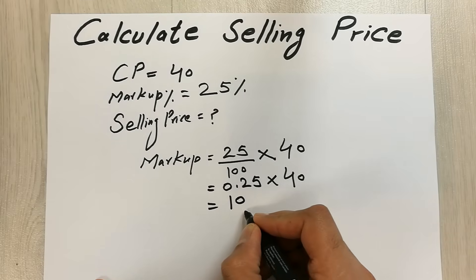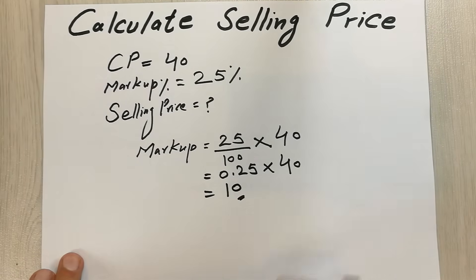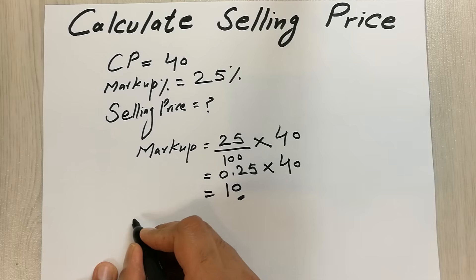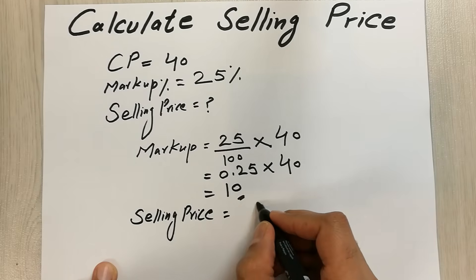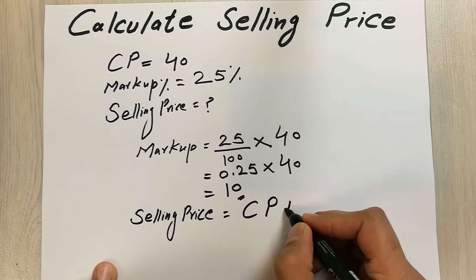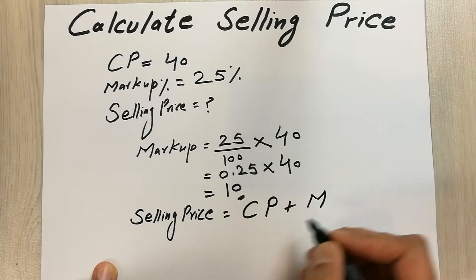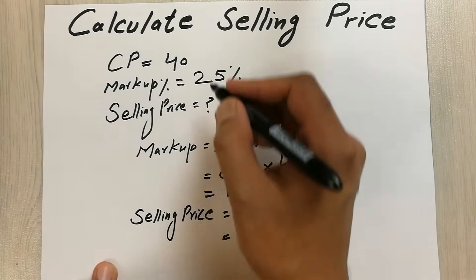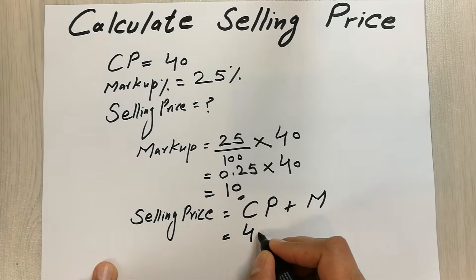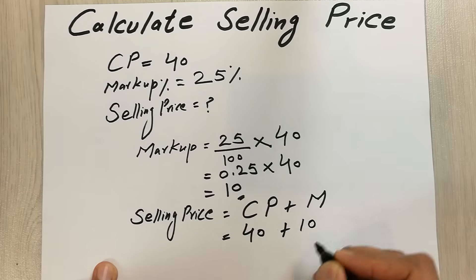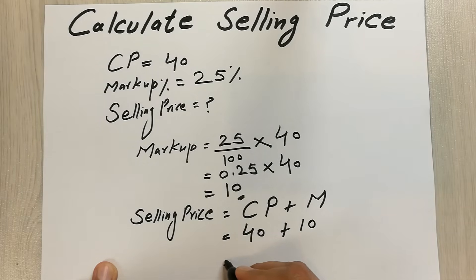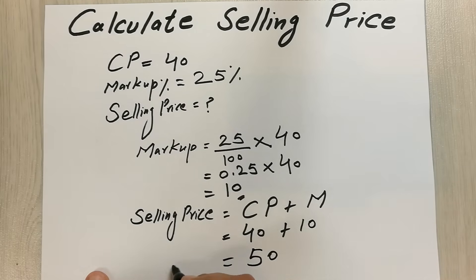So 10 is our markup amount. Now we simply apply the formula: SP = CP + Markup. The cost price is 40, plus the markup of 10, which gives us a selling price of 50.